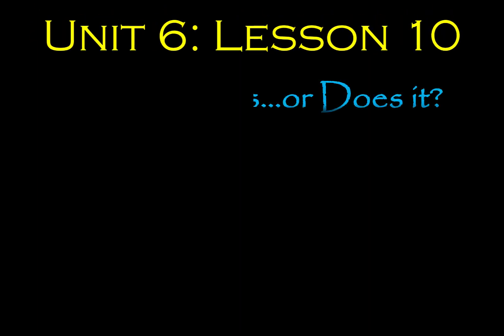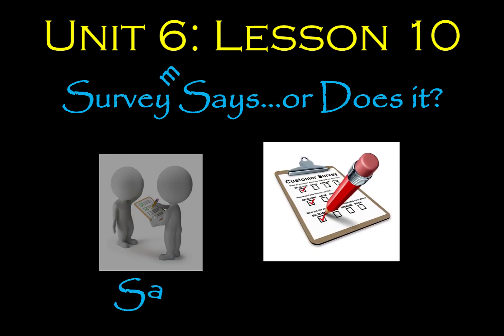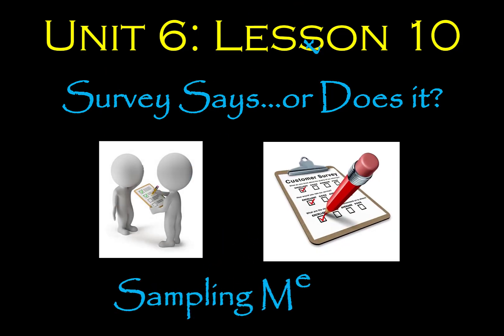This is Unit 6, Lesson 10 for 7th grade Algebra 1. In this lesson we're going to be looking at sampling methods and biased and unbiased sampling methods. This is a very vocabulary-heavy focused lesson.